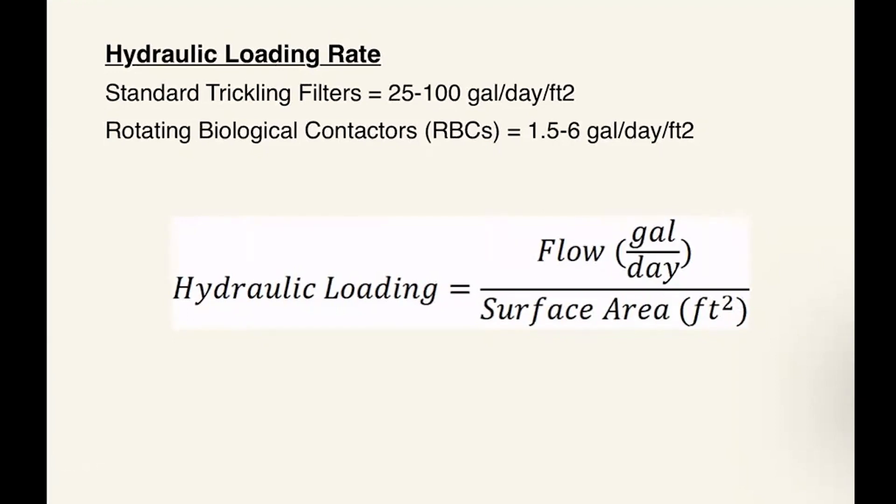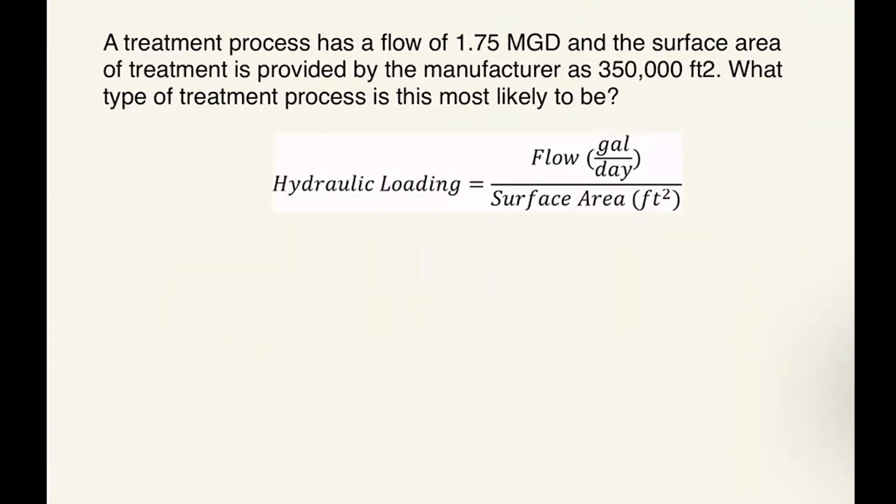Let's practice this with a problem. A treatment process has a flow of 1.75 MGD, and the surface area of treatment is provided by the manufacturer as 350,000 square feet. What type of treatment process is this most likely to be?